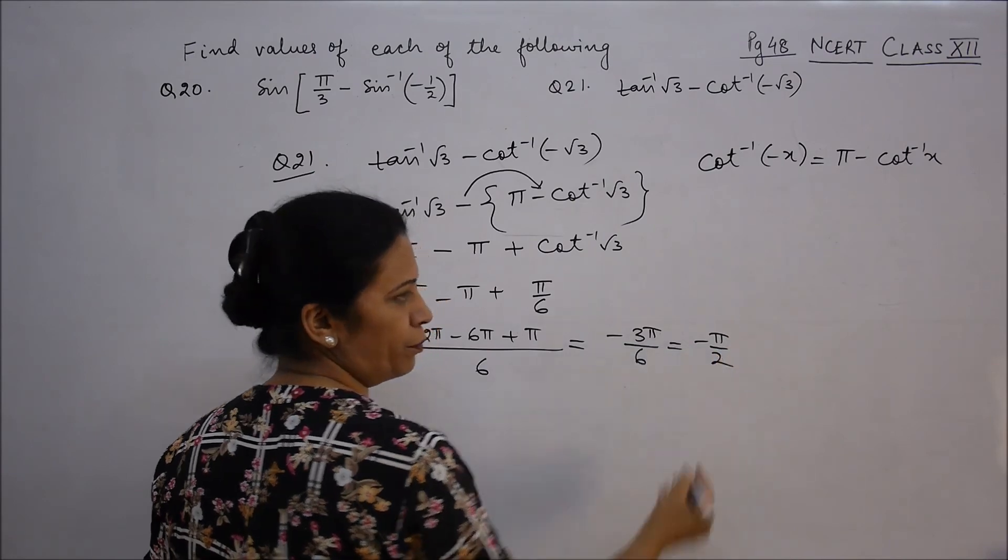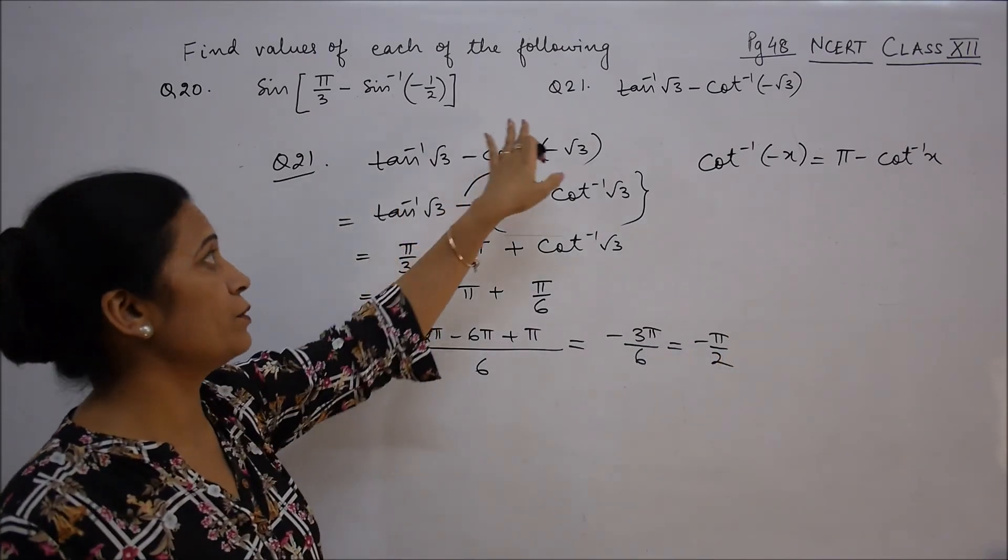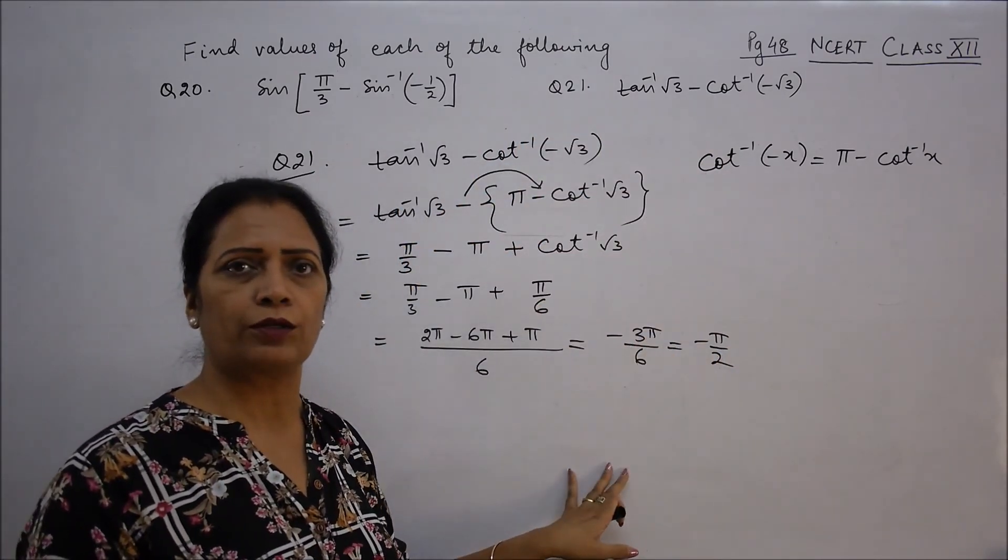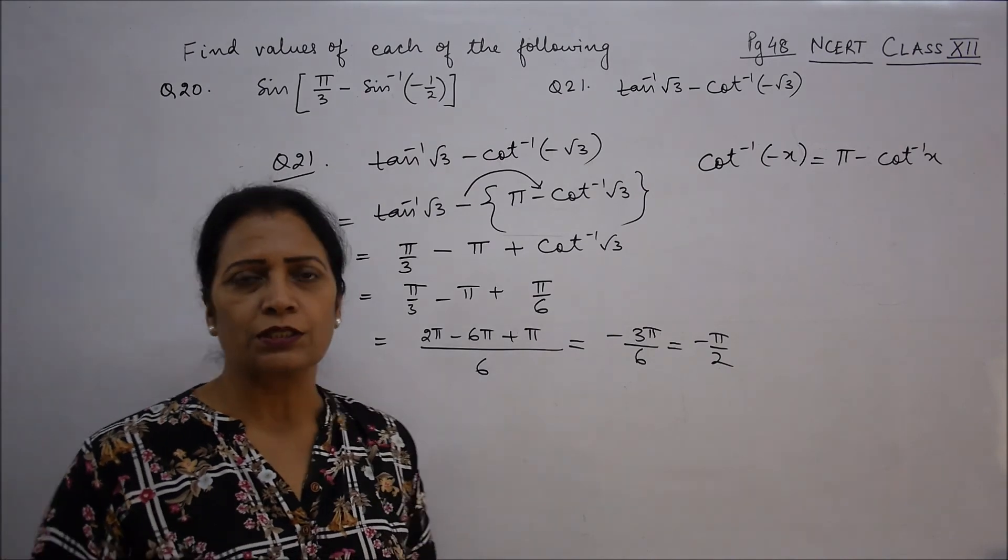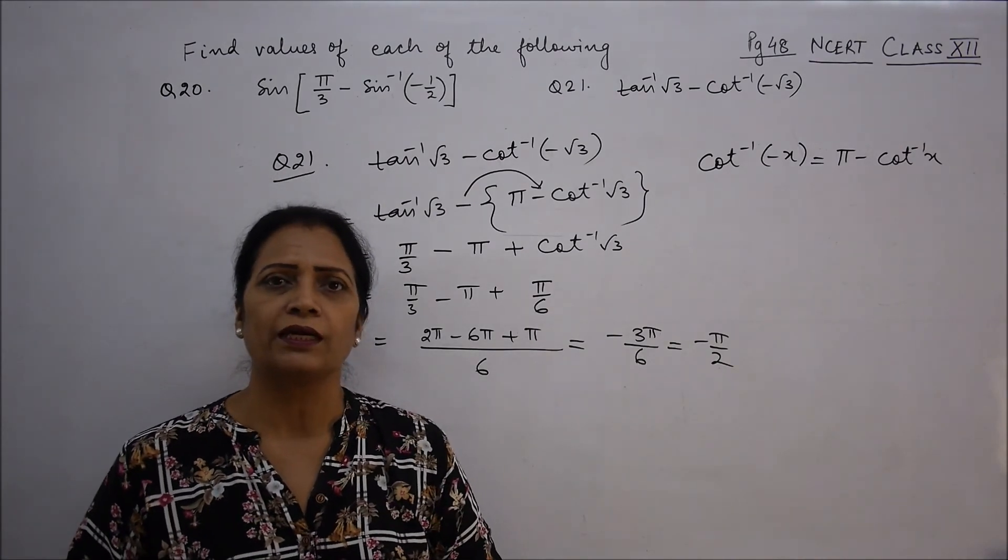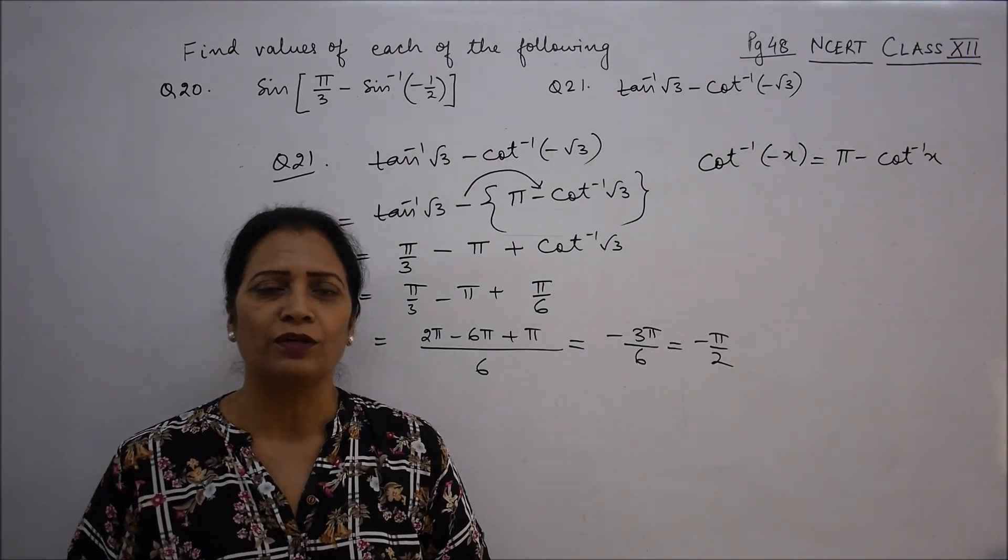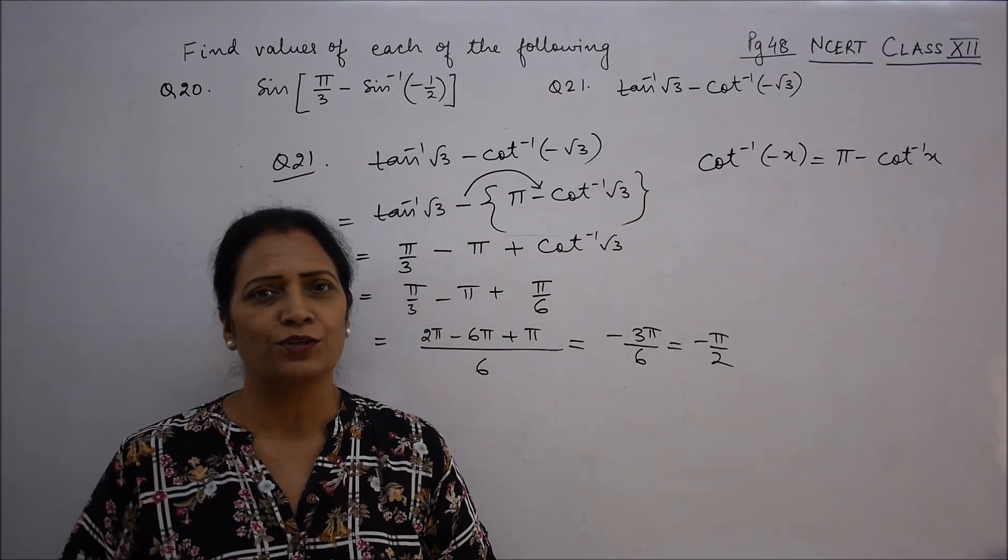Cancel to get -π/2. This is the value of our expression. I hope it's clear now. Please like the video and subscribe to the channel. See you in the next video. Thank you.